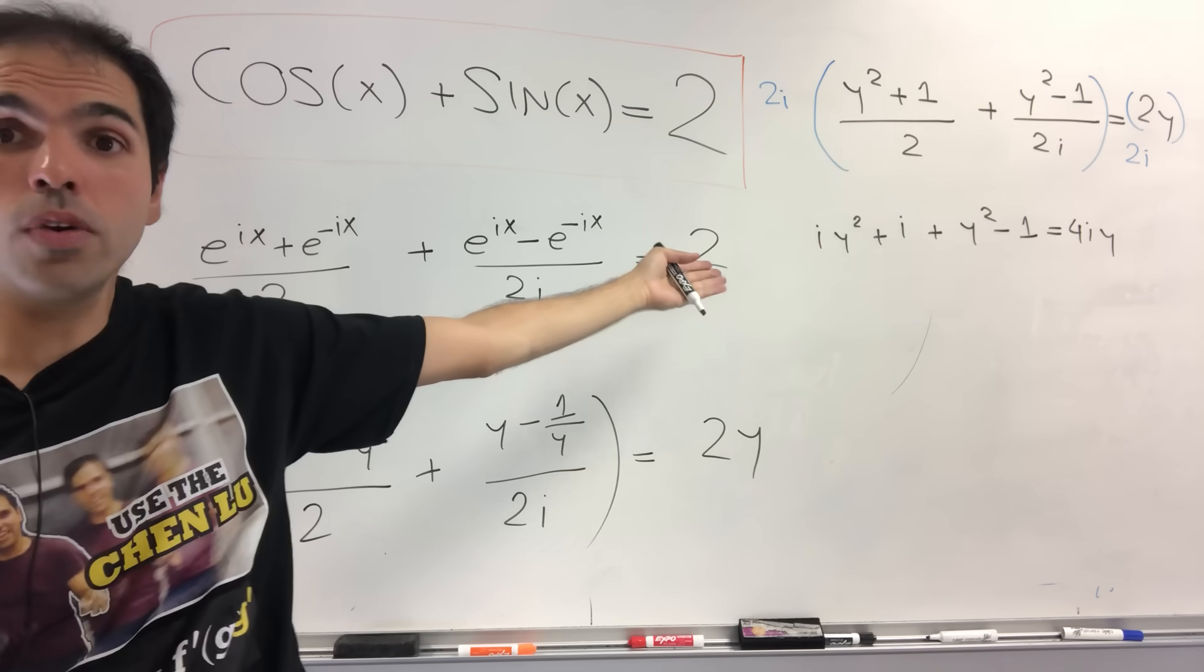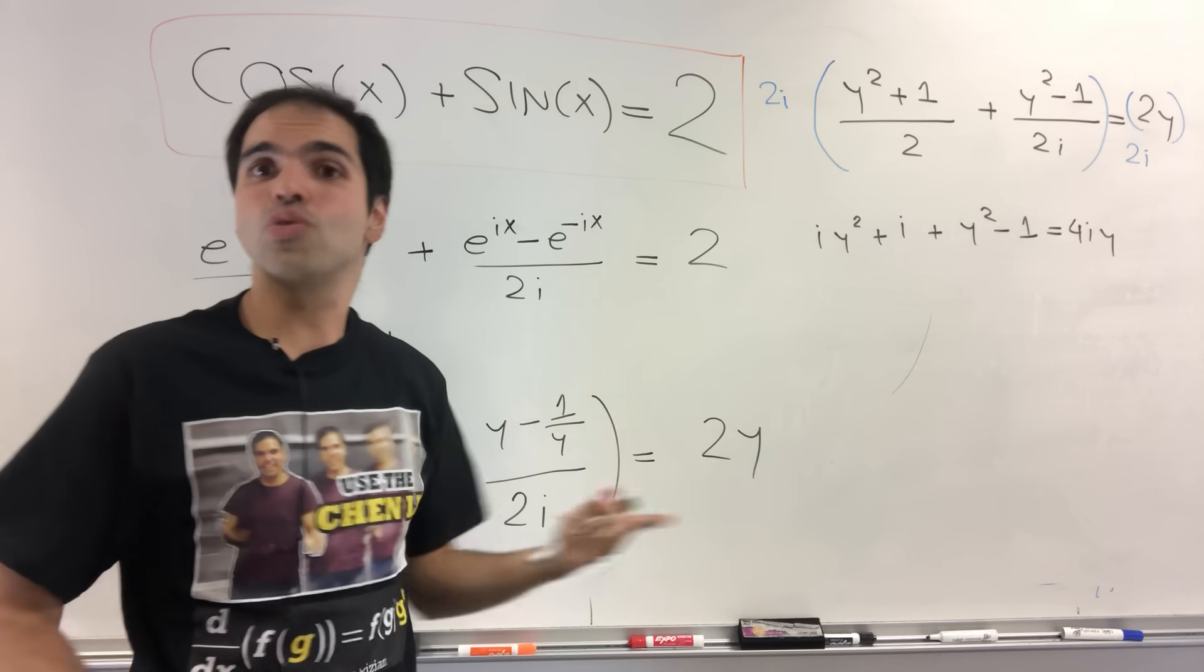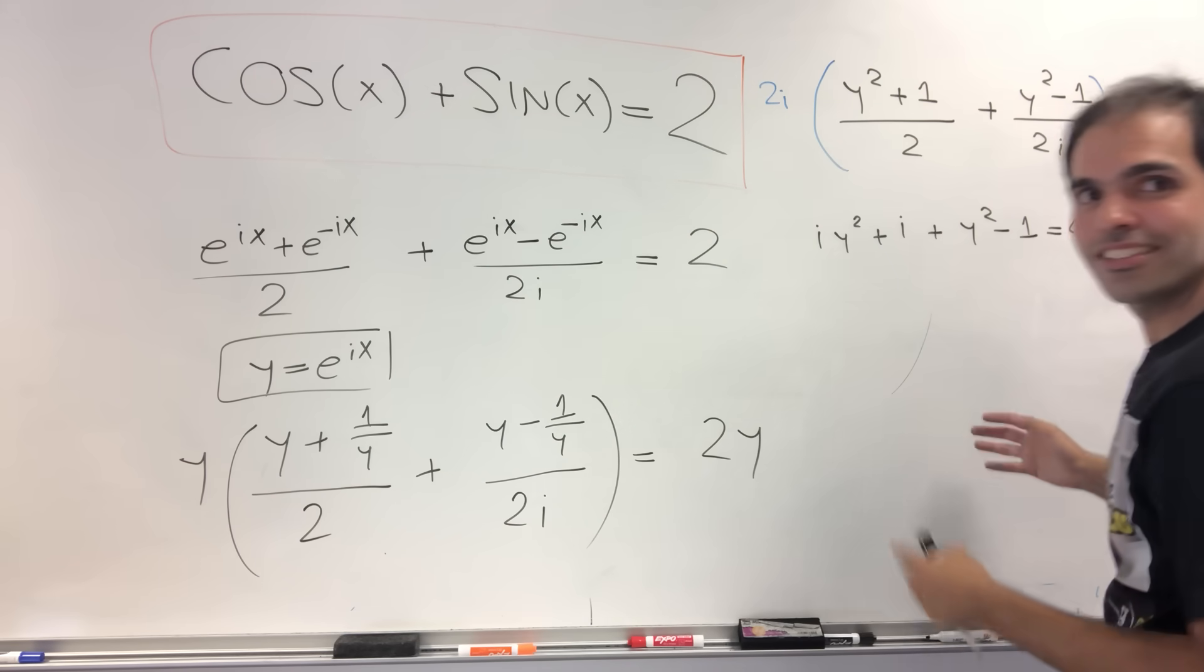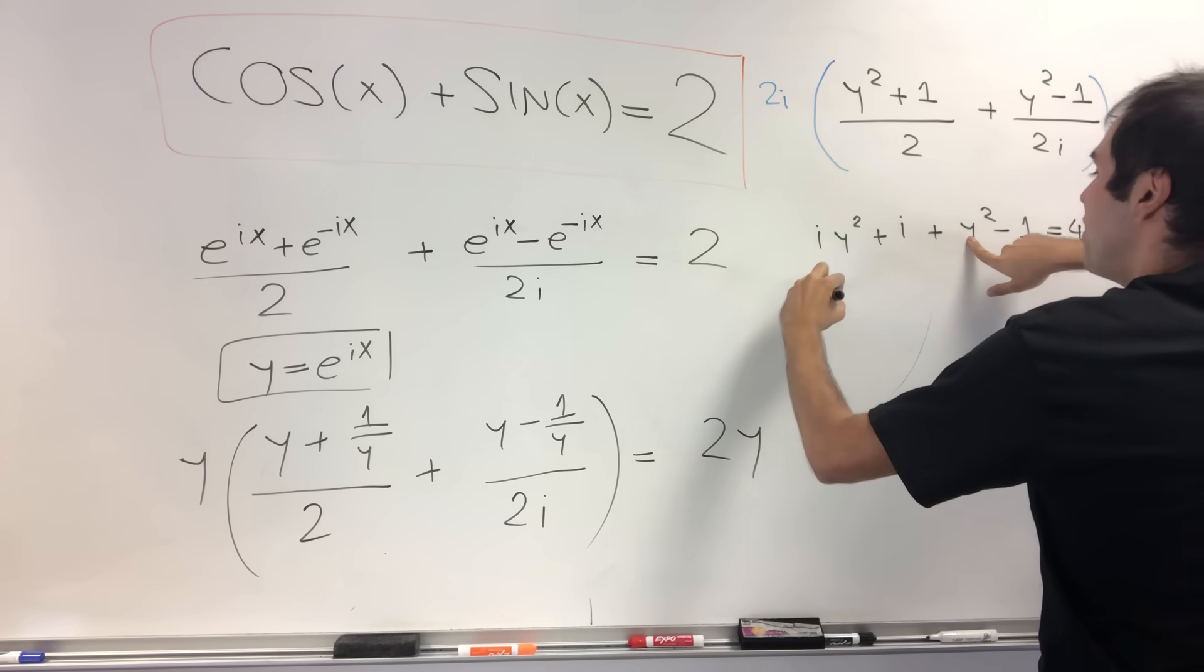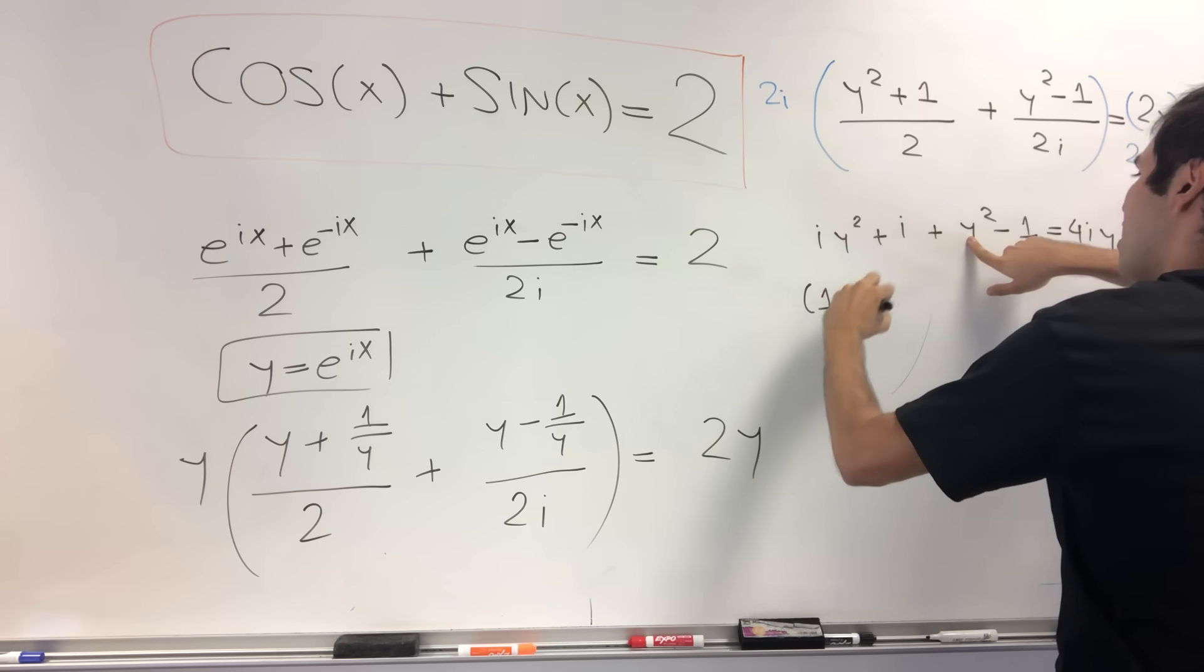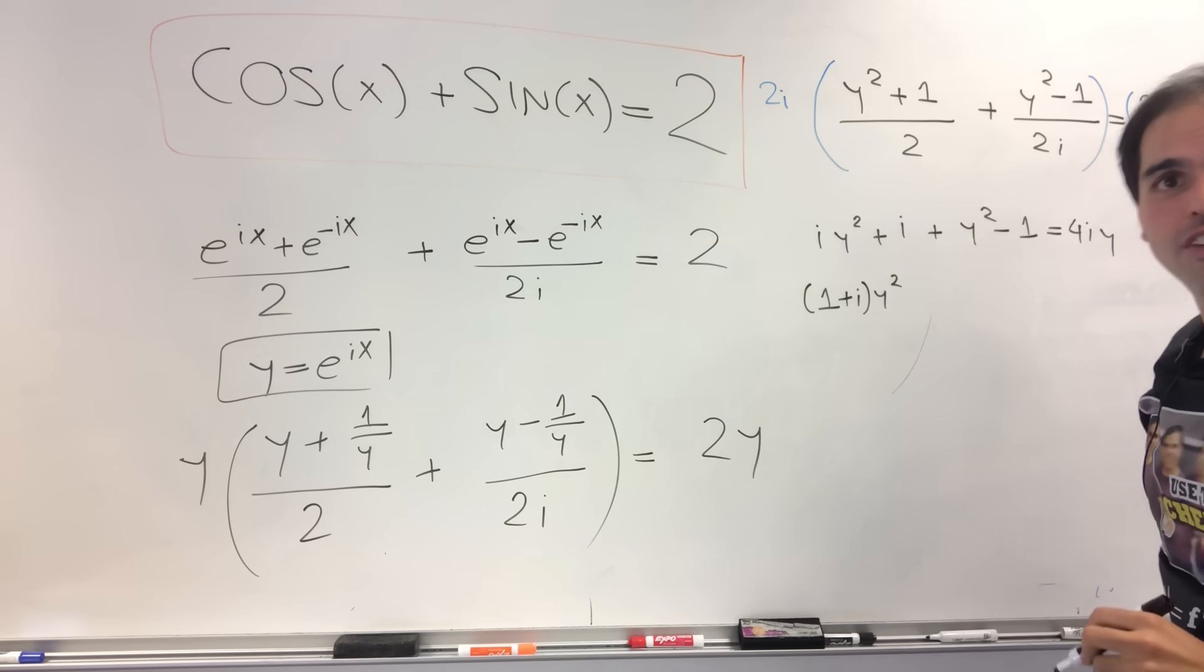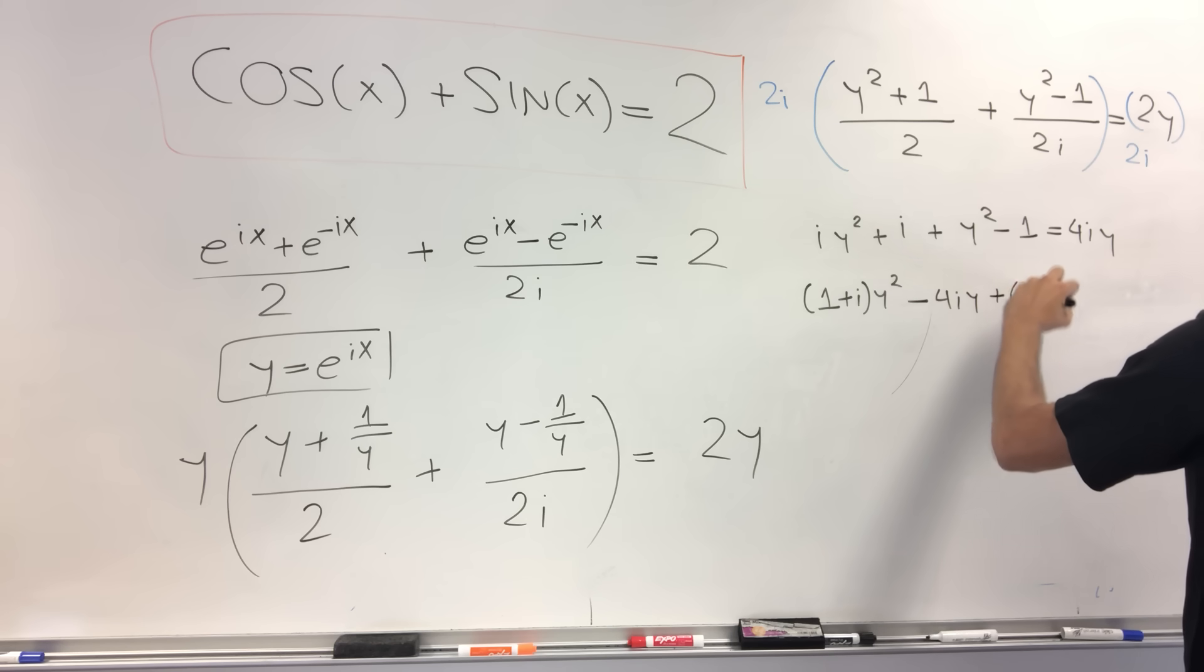And now notice this is actually just a quadratic equation. So let's just write it in the standard form, namely, we get (1 + i)y² just gathering the coefficients of y², and then minus 4iy, and then plus (-1 + i) equals 0.